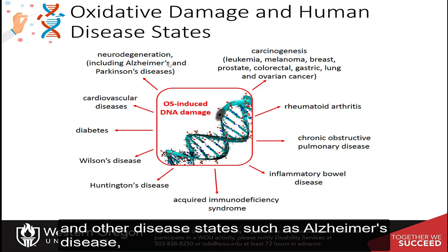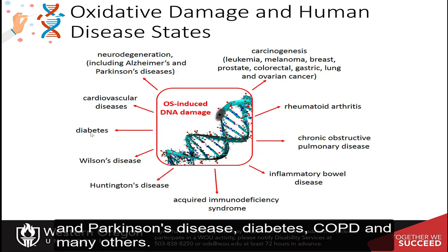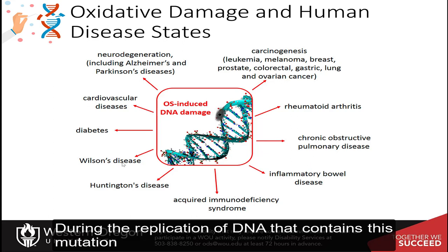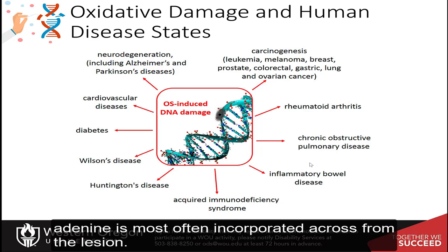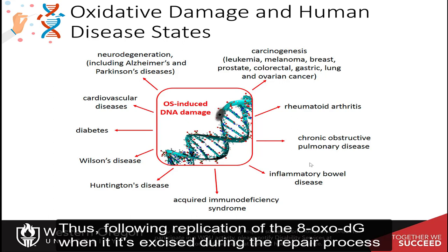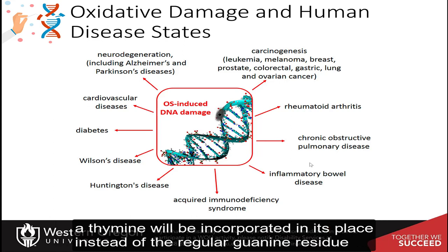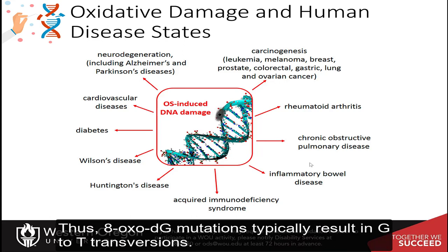Increased levels of 8-oxo-7,8-dihydroguanine are frequently found associated with carcinogenesis and other disease states such as Alzheimer's disease, Parkinson's disease, diabetes, COPD, and many others. During the replication of DNA that contains this mutation, adenine is most often incorporated across from the lesion. Thus, following replication of the 8-oxo-DG, when it is excised during the repair process, a thymine will be incorporated in its place instead of the regular guanine residue. Thus, 8-oxo-DG mutations typically result in G-to-T transversions.